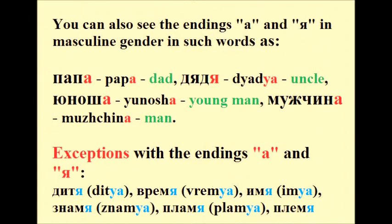You can also see the endings А and Я in masculine gender in such words as папа, дядя (uncle), юноша (young man), мужчина. There are also some exceptions with the nouns that end in А or Я.